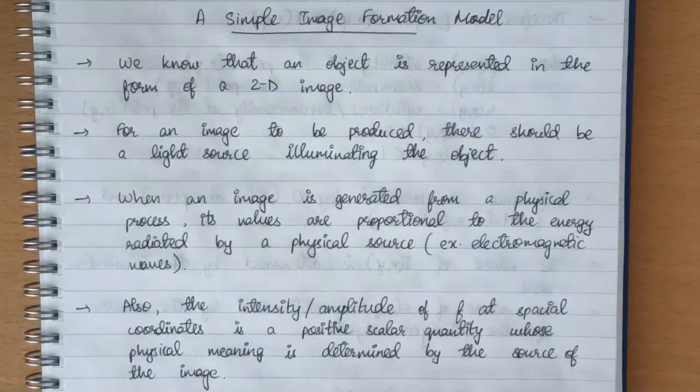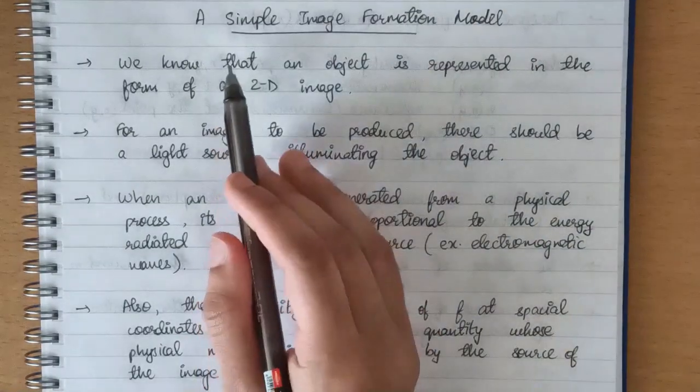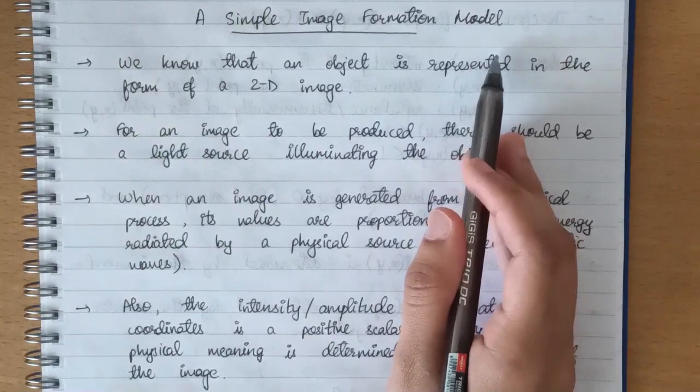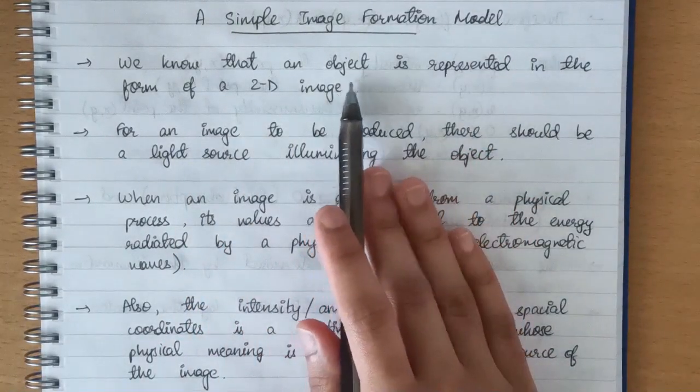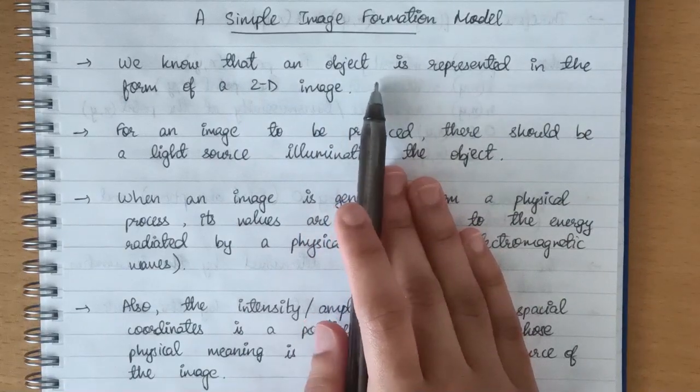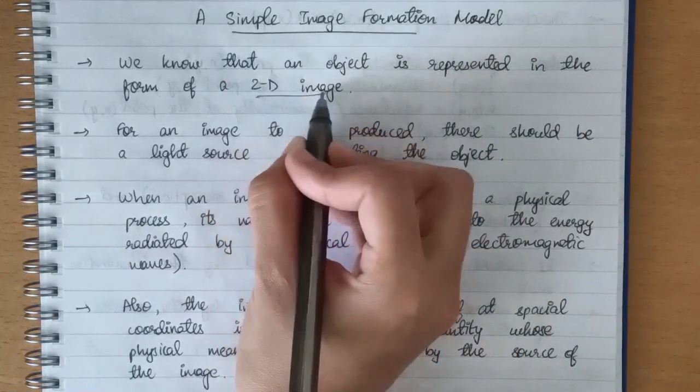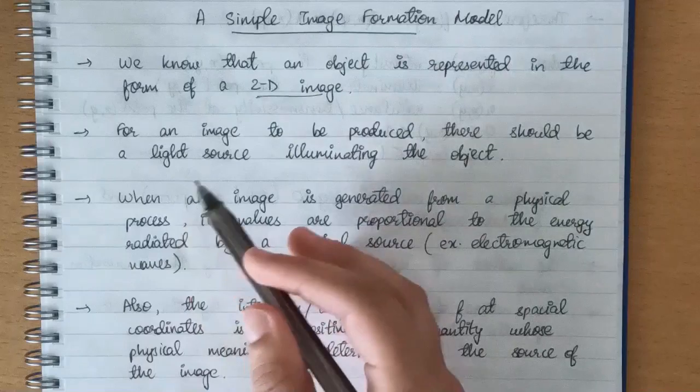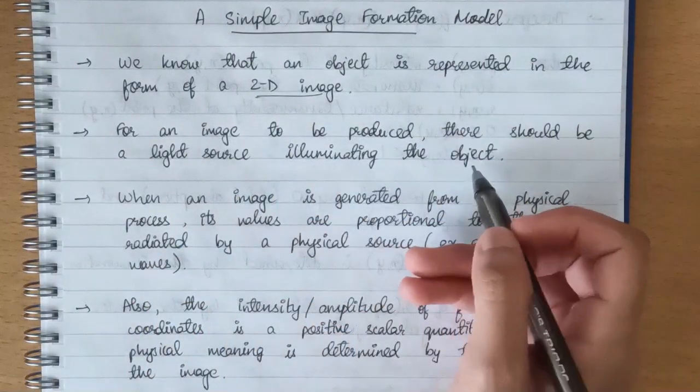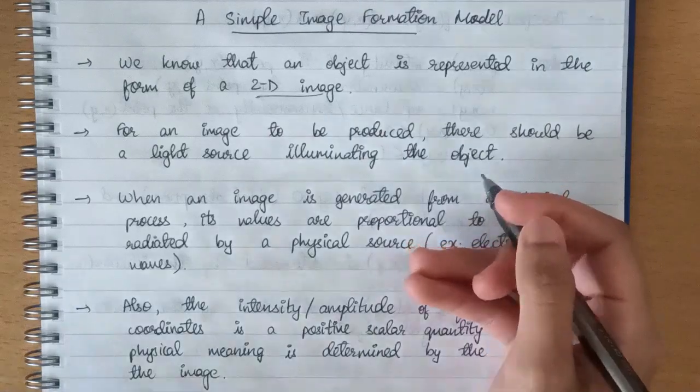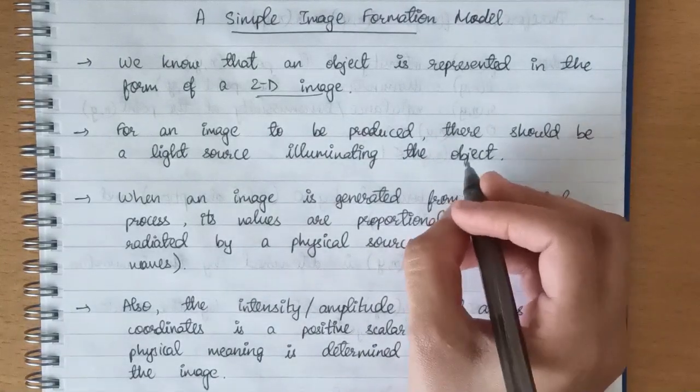Those were the definitions. Now we'll move on to a simple image formation model. We know that any object in the real world can be expressed with the help of a 2D image. So for an image to be produced, there should be a light source illuminating the object. When we have a light source, that is when we'll be able to see the object.